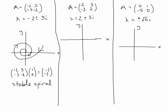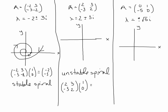For the complex eigenvalue with a positive real part, all solutions go away from the origin — this is an unstable spiral. Multiplying the matrix by (1, 0) gives the vector (2, -3). From (1, 0), an arrow in direction (2, -3) also indicates clockwise motion. So solutions spiral clockwise outward from the origin.